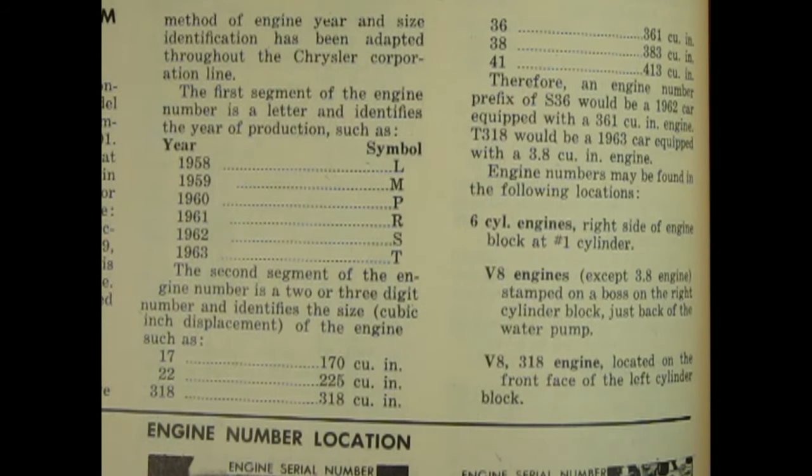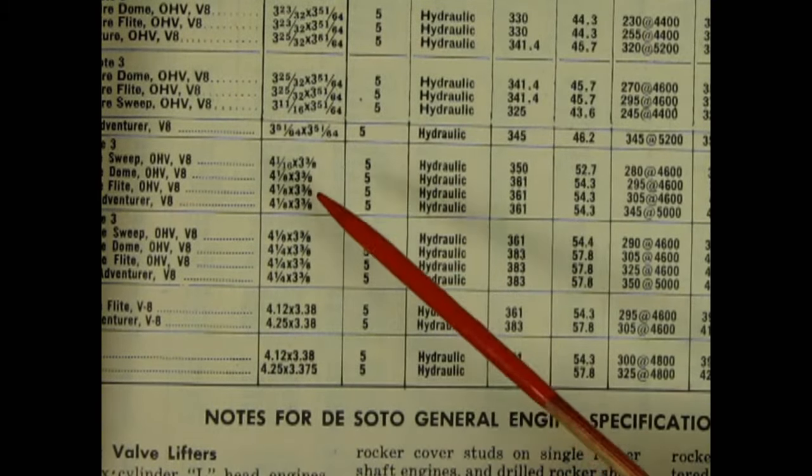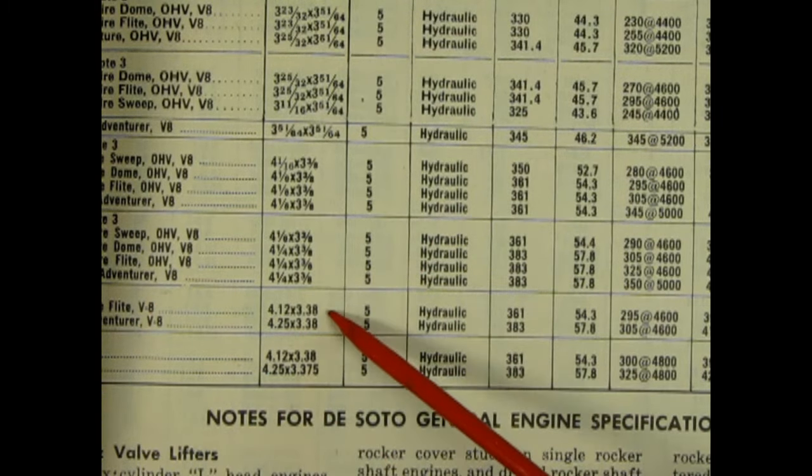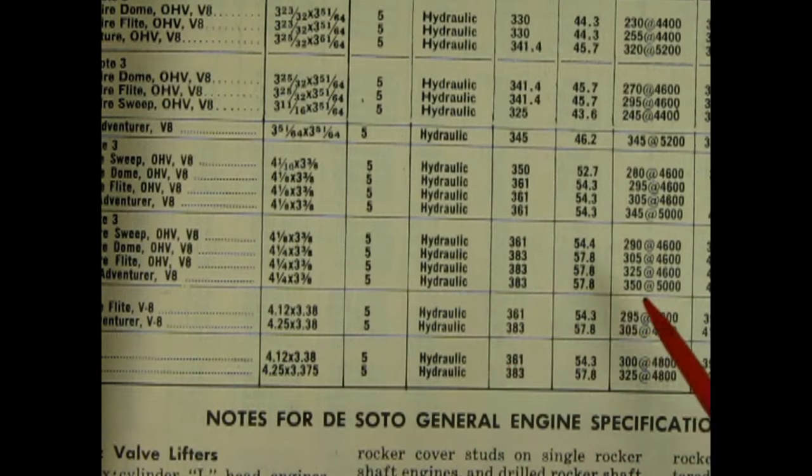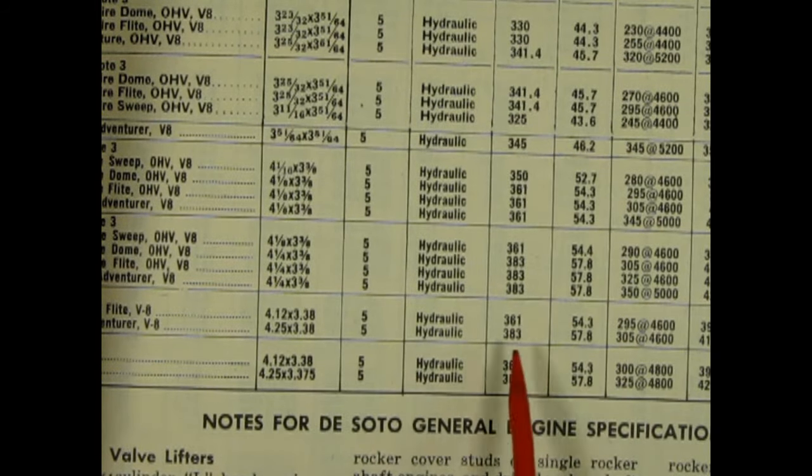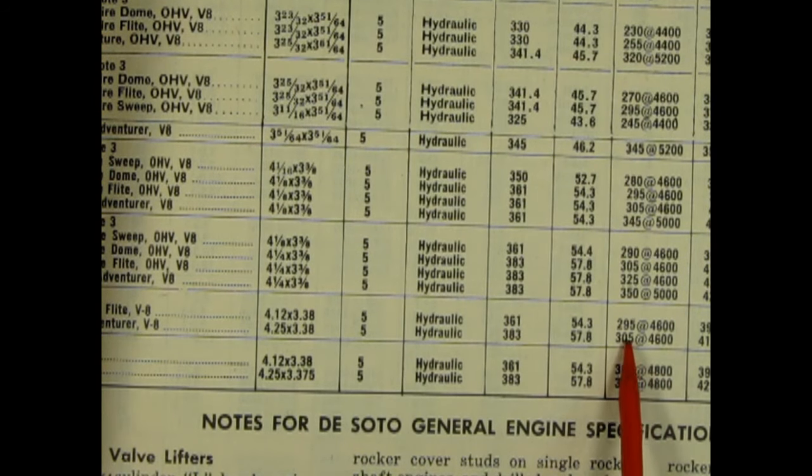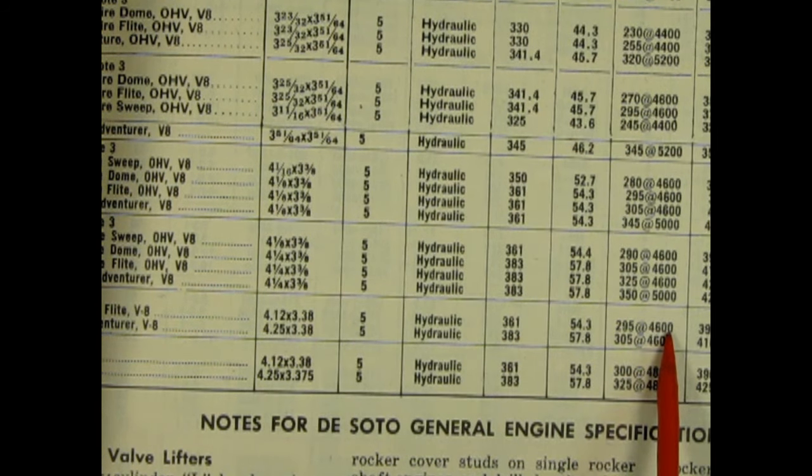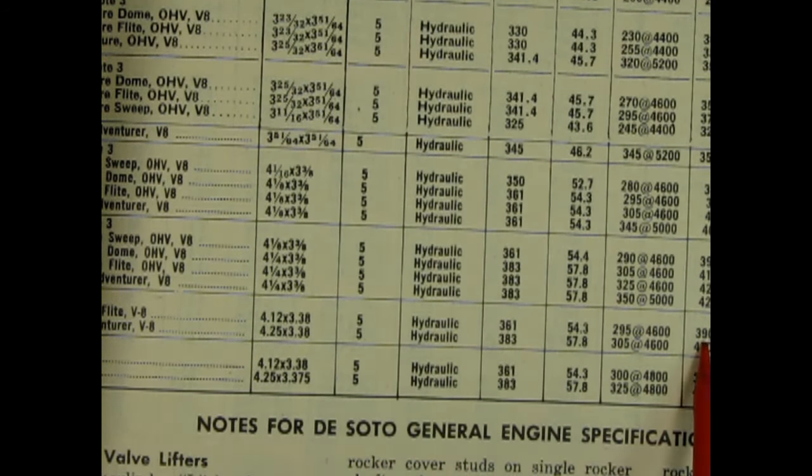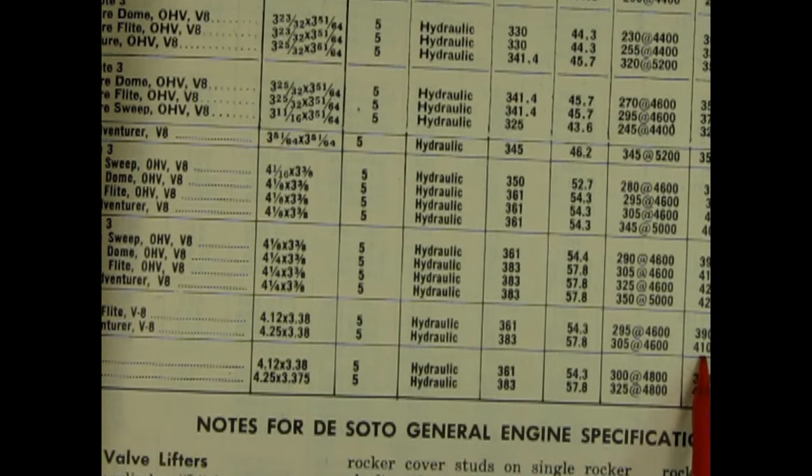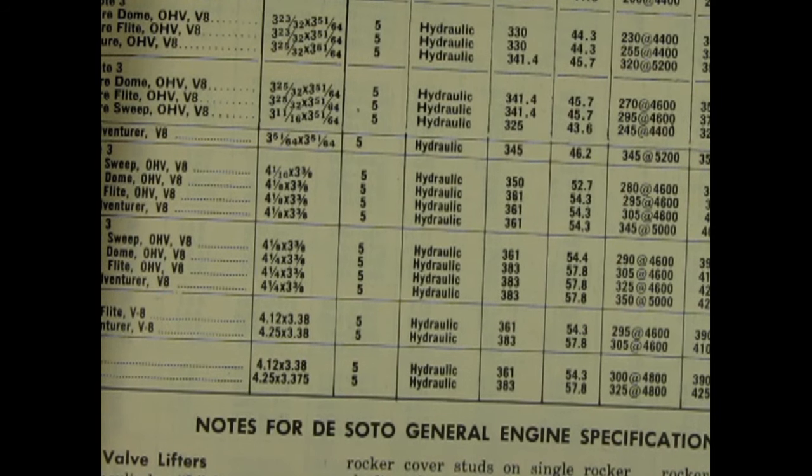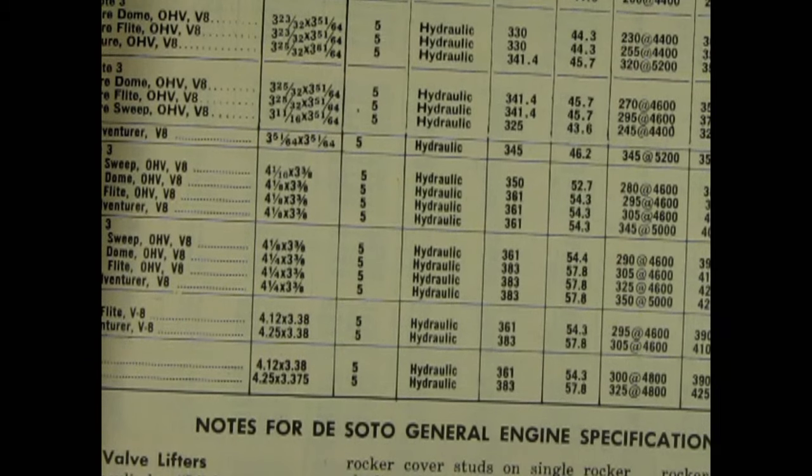I'm not 100% sure which engine this is supposed to be in this kit, but it would be either a 318, 361, potentially 383, or 413. I flipped the pages a bit and I found out what engine this would be. Here you've got 1960 PS-1 Fire Flight V8 and you also have an Adventurer V8. It's a 361 for the Fire Flight and a 383 for the Adventurer. You have advertised horsepower 295 at 4600 RPM or 305 at 4600 RPM for the Adventurer V8, and your torque 390 at 2400 RPM or 410 at 2400 RPM for the Adventurer V8.